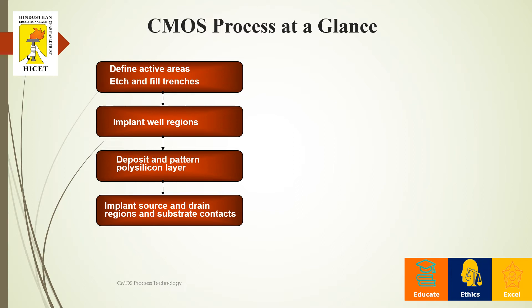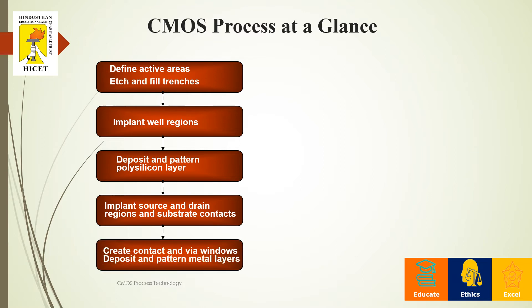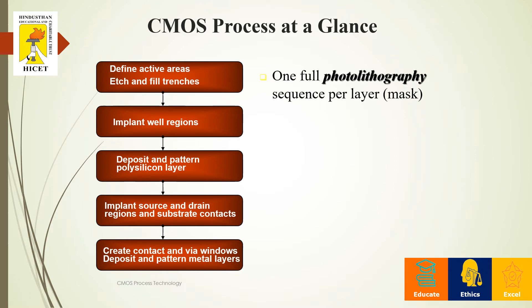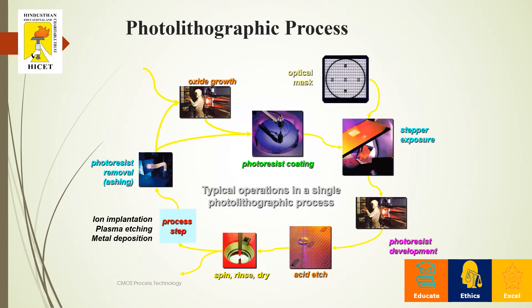As you already know, CMOS is similar to a MOSFET, which has three terminals: source, drain, and gate. Once the polysilicon deposition and implantation are done, we create the contact cut. The main purpose of the contact cut is to allow a metal layer to be placed inside it. After all these steps are complete, we proceed to the photolithographic process.